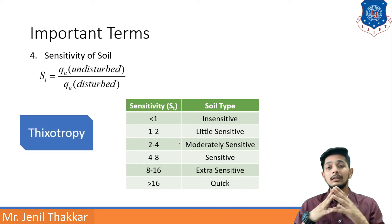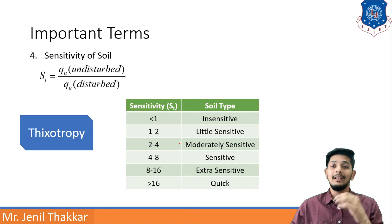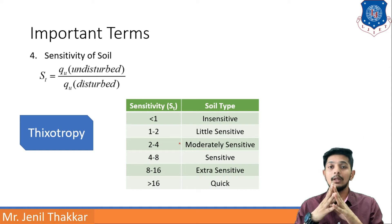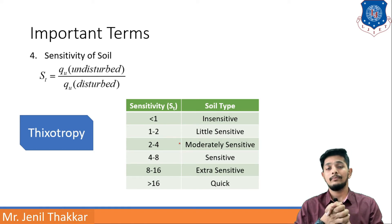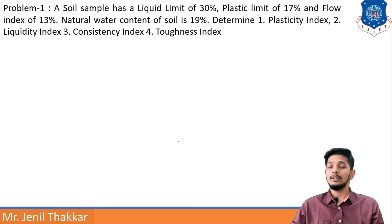Another term: thixotropy. Thixotropy is a process in which the soil gets liquefied or gets into a fluid form quickly without applying any load. After some time, soil becomes fluidic without applying any compression or load — that process is known as thixotropy. Now let us move to numericals.